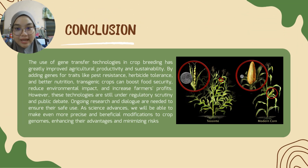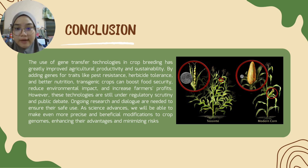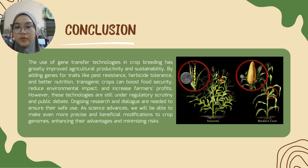In conclusion, the use of gene transfer technologies in crop breeding has greatly improved agricultural productivity and sustainability. By adding genes for traits like pest resistance, herbicide tolerance, and better nutrition, transgenic crops can boost food security, reduce environmental impact, and increase farmers' profits. However, these technologies are still under regulatory scrutiny and public debate. Ongoing research and dialogue are needed to ensure their safe use. As science advances, we will be able to make even more precise and beneficial modifications to crop genomes, enhancing their advantages and minimizing risks.